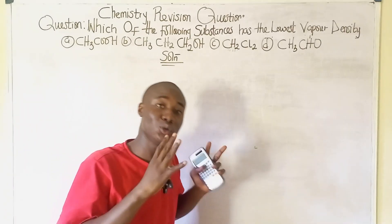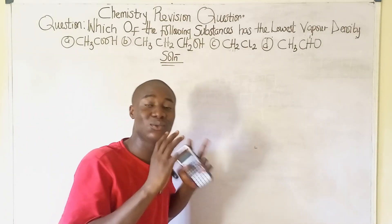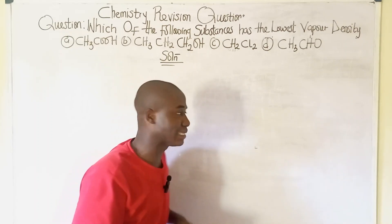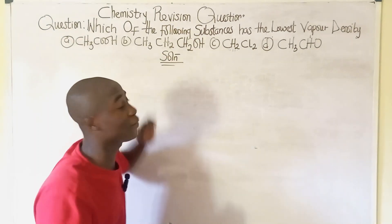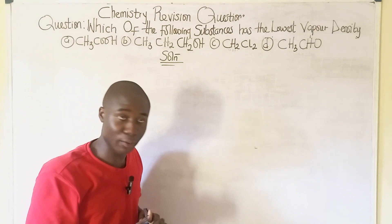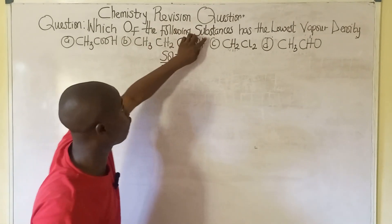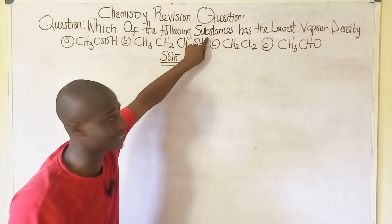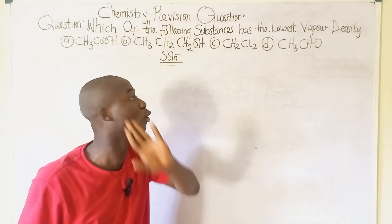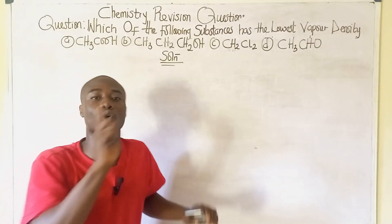Welcome to today's video lesson with Bright Edo. In today's lesson, I'll be answering this question written on the board: which of the following substances has the lowest vapor density?